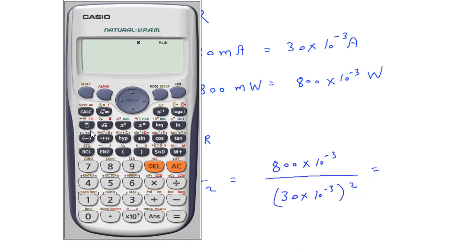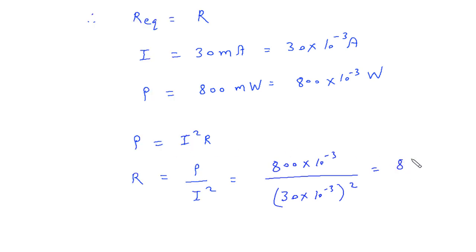This will be 800 into 10 raise to minus 3 divided by 30 into 10 raise to minus 3 square. This will be 888.88 ohm.